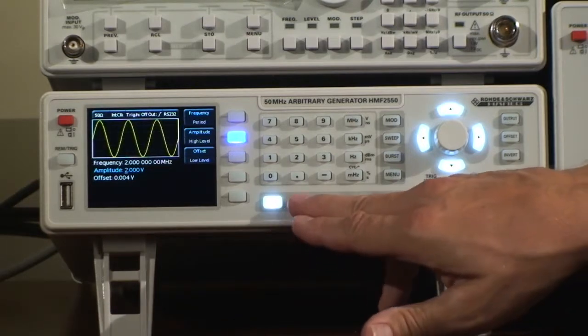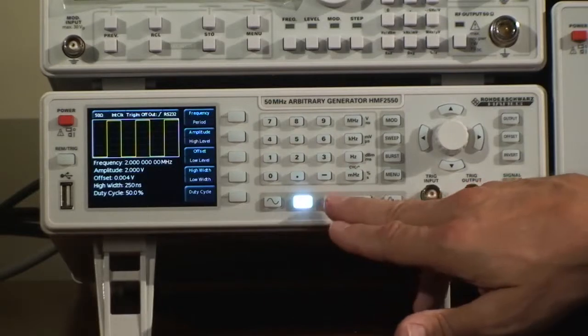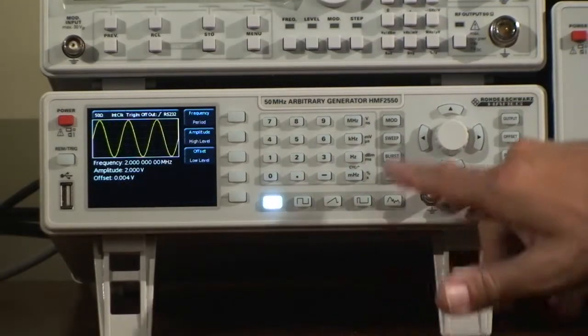If I want to have a sinusoidal square wave, simply press that button and so on for the other waveforms. Going back to sinusoidal, I now want to add modulation and modulation in this case here is AM.